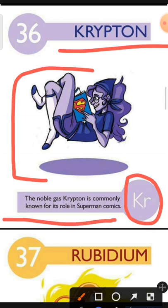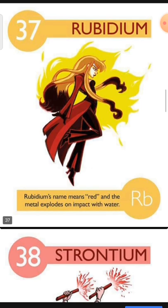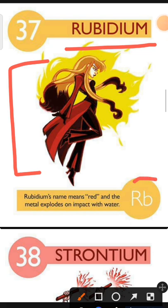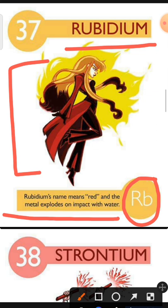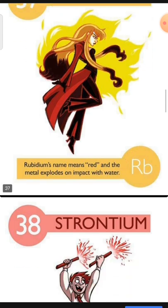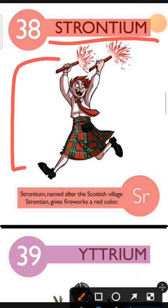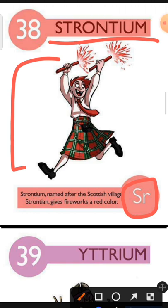Element number 37 is Rubidium. The characteristic of Rubidium is: Rubidium's name means red and the metal explodes on impact with water. Element number 38 is Strontium. The characteristic of Strontium is: Strontium, named after the Scottish village of Strontian, gives fireworks a red color.